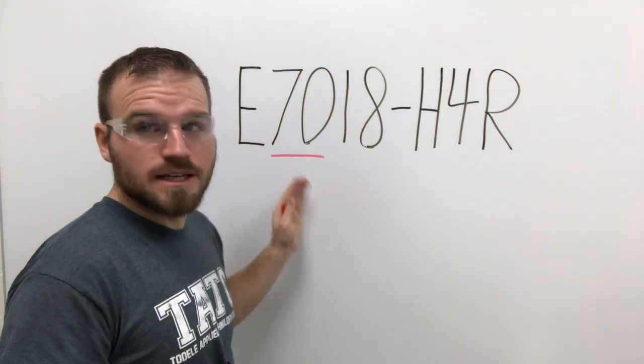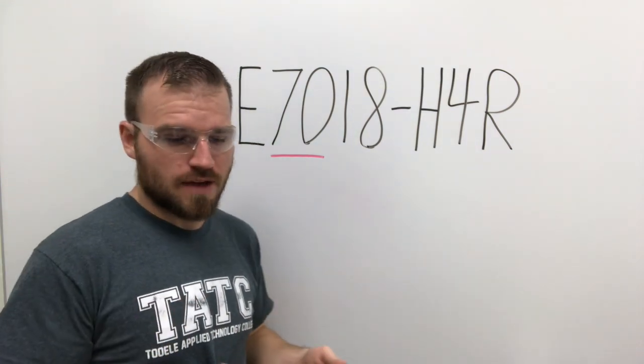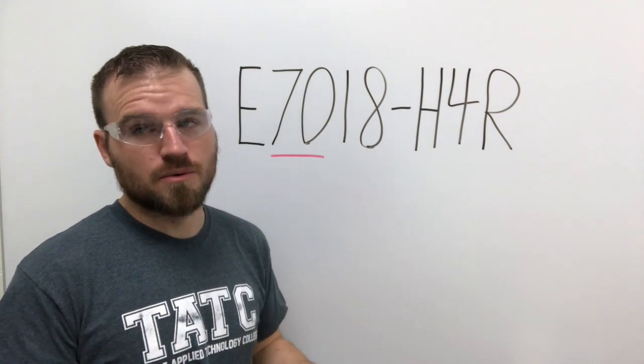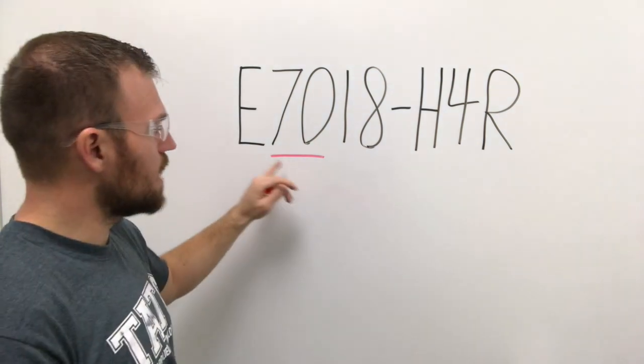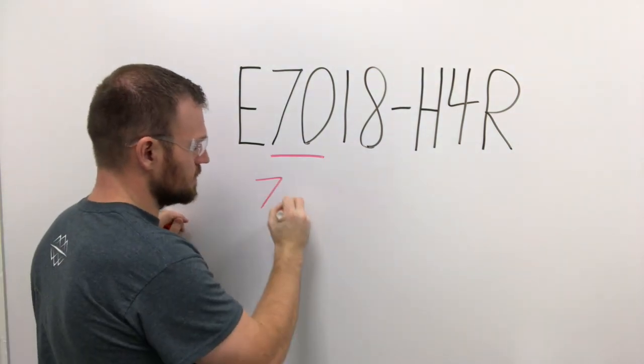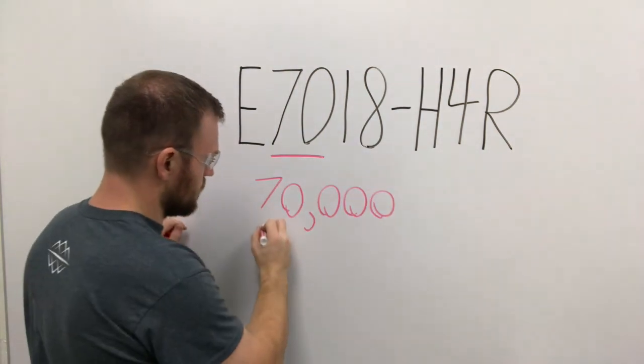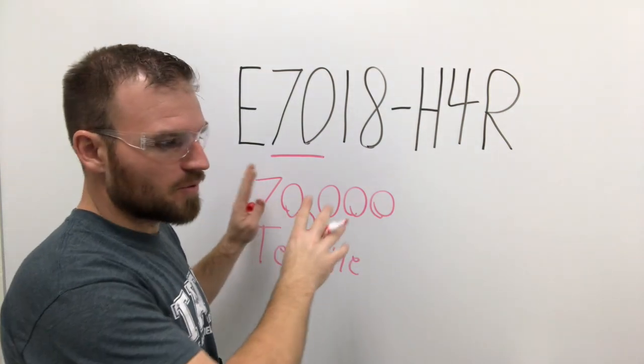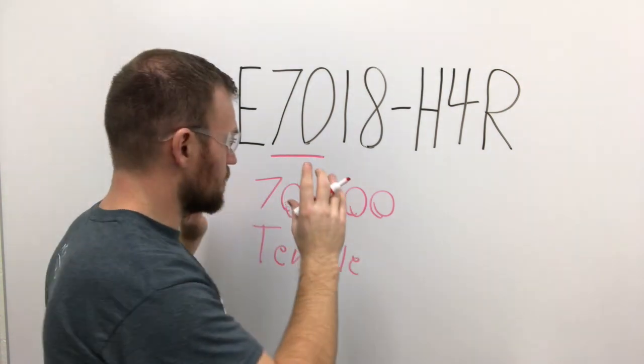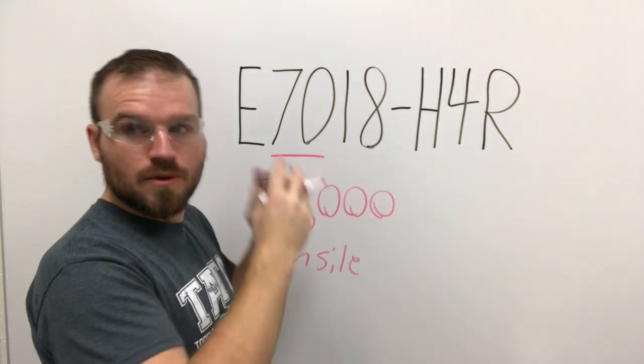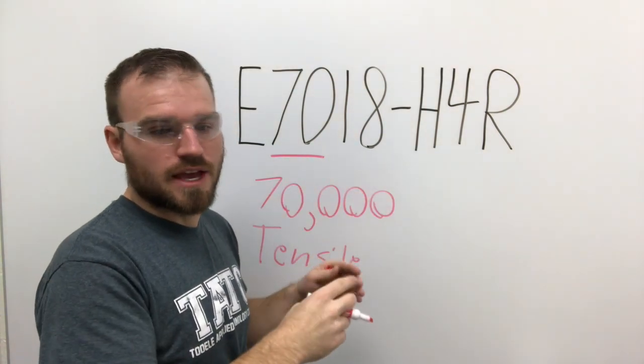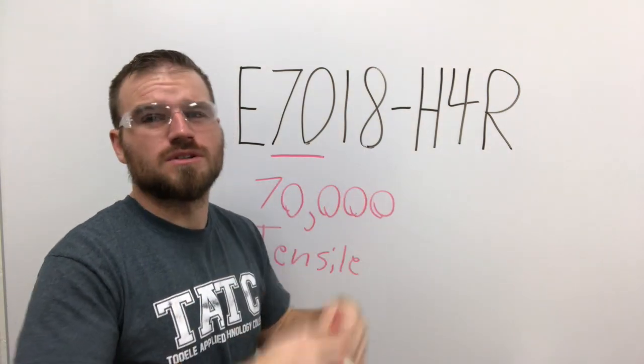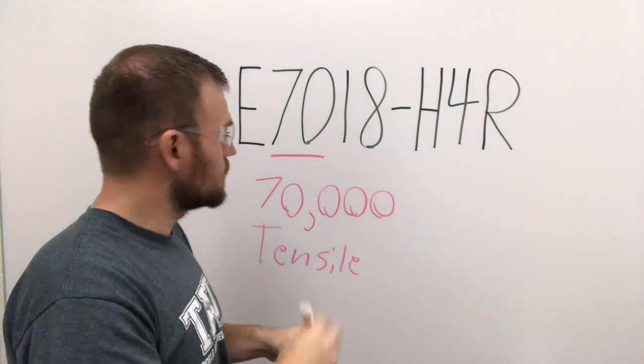The next thing I want to point out is going to be this 70 right here. Now the 70 is going to indicate tensile strength. It doesn't always have to be a 70. Going back to our 6010 that we talked about earlier, it's a 60 tensile strength. Tensile strength can be measured from 60 all the way up to 120. You just have to decide which one fits your project the best. Most of the time the engineer will determine this for you. If you had 70 here, it would actually be 70,000 tensile strength.